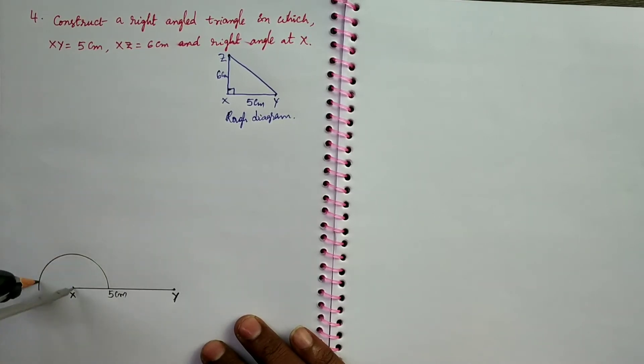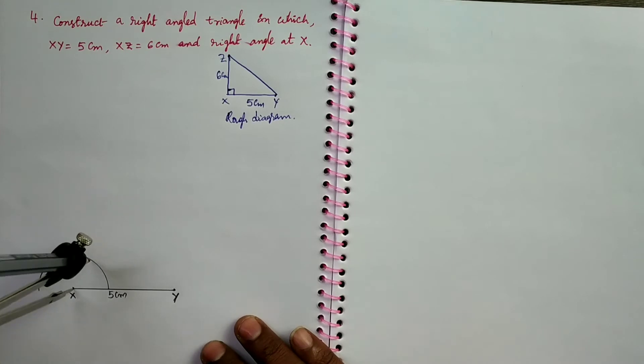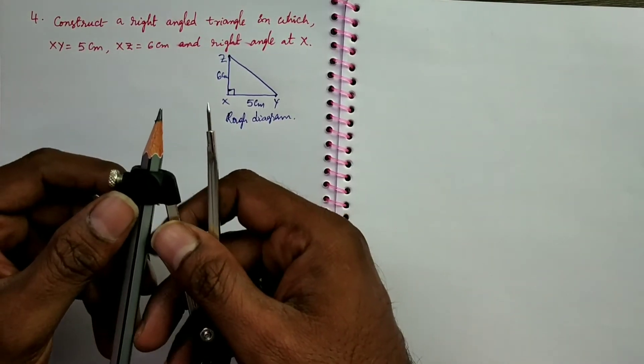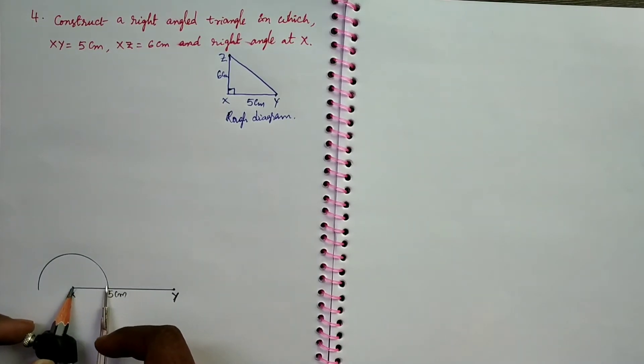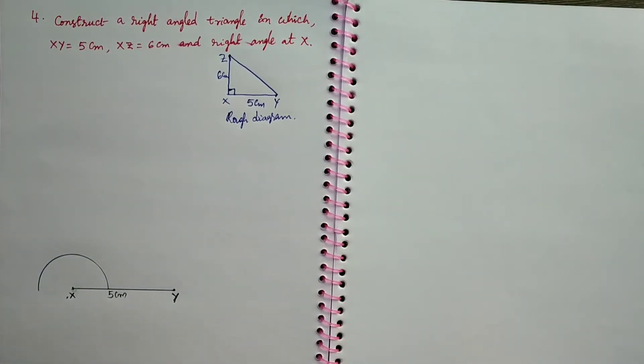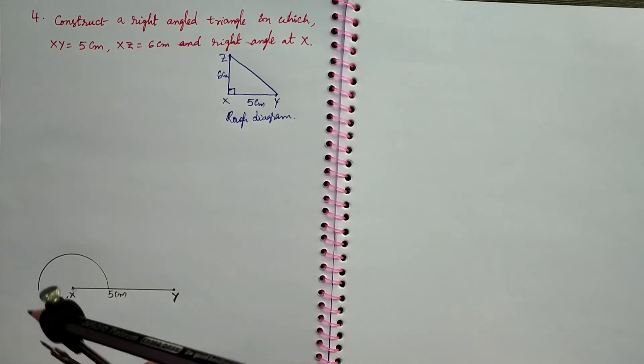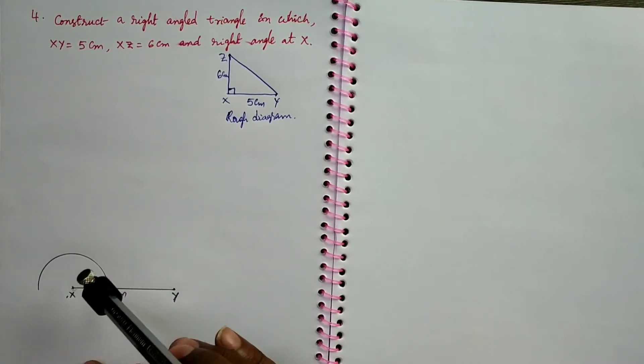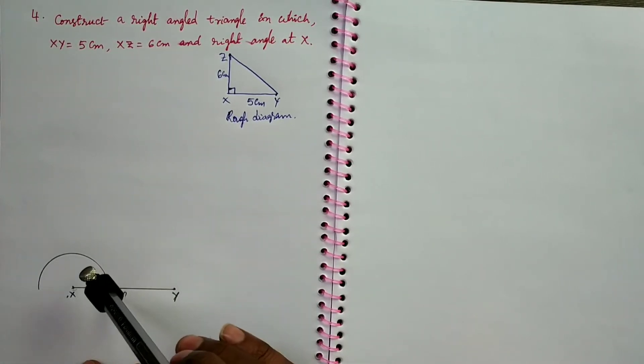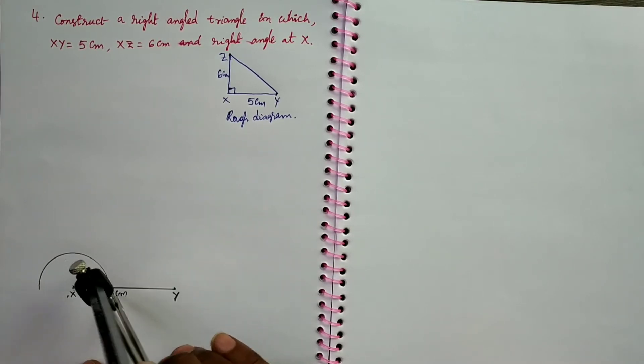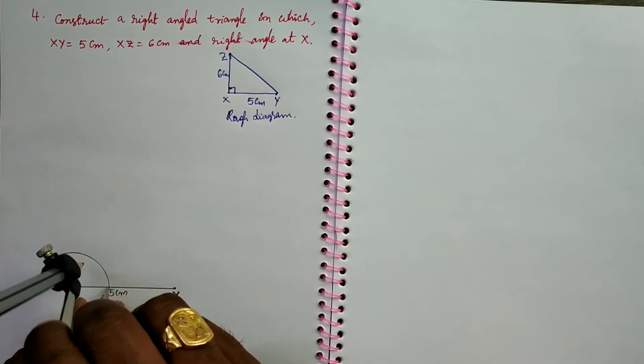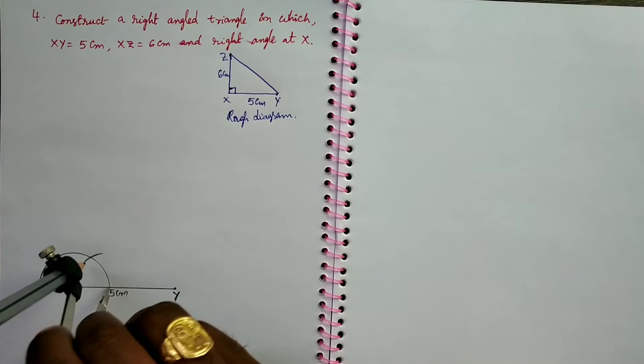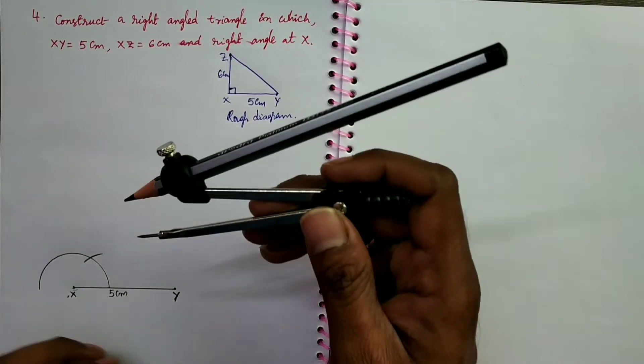Until the construction of 90 degrees, this measurement should not be changed. You can take until they complete the construction with this measurement only. From the intersection of this line segment and the arc, keep a compass point. Draw an arc. It indicates 60 degrees.